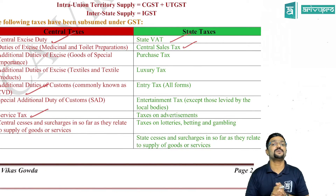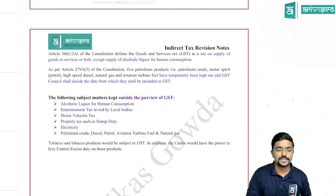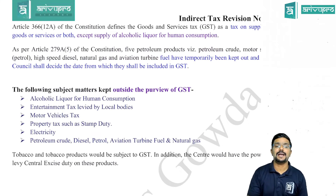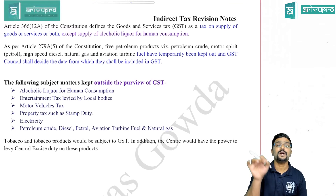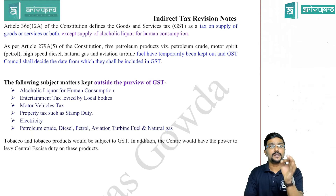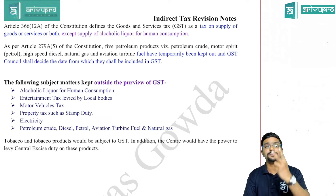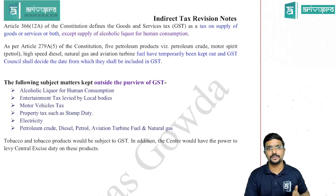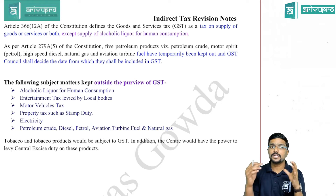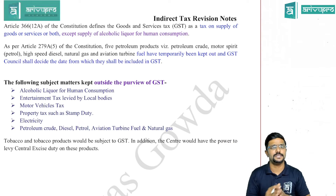Article 366(12A) of the constitution defines GST as tax on supply of goods and services or both. The taxable event under GST is supply, and on supply of both goods as well as services, GST is levied. Goods, services, and supply — all three have been defined and will be learned in chapter 2. Alcoholic liquor for human consumption is completely kept outside the GST.